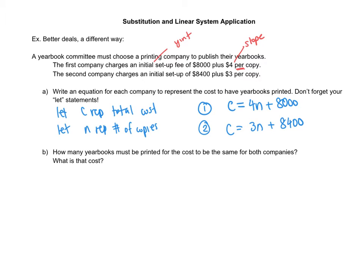Now we have our two equations. In the past we would set up a table of values and start filling it in, not really knowing when to stop or how much to go up by. With substitution, we don't have to worry about that. Both equations have C isolated, which means since C = 4N + 8,000, we can substitute that into the C in the second equation because they are equal to each other. So we get 4N + 8,000 = 3N + 8,400.